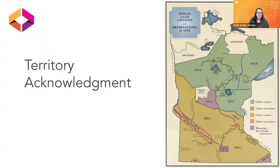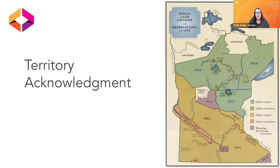A territory acknowledgement slide is included in the OEM publishing slide deck — you can customize this to your local context. I left this for Minnesota because I didn't have time to add a picture of Kentucky, but I am coming to you from Kentucky. Indigenous peoples have always lived on the land that is now called Kentucky and continue to live here today. The place we call Kentucky is primarily Shawnee, Cherokee, Chickasaw, and Osage land.